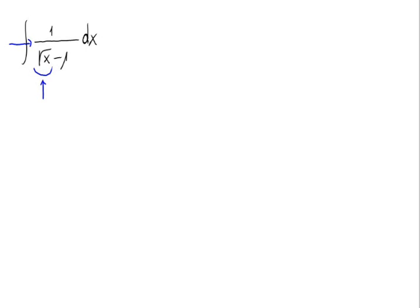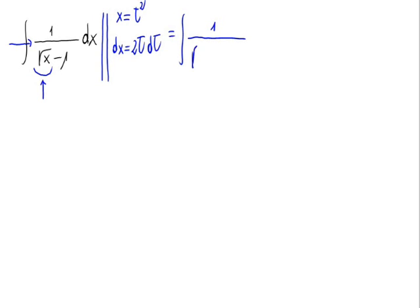We would need something squared inside the square root so everything comes out. So let's set x equal to t squared. The derivative of x would then be 2t times the derivative of t. Substituting this into the integral, we would have 1 divided by the square root of t squared minus 1, times 2t dt.